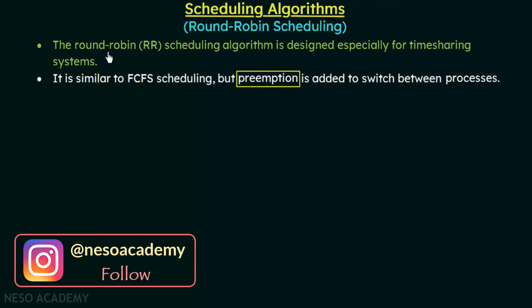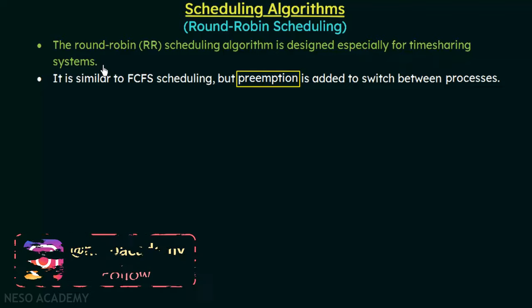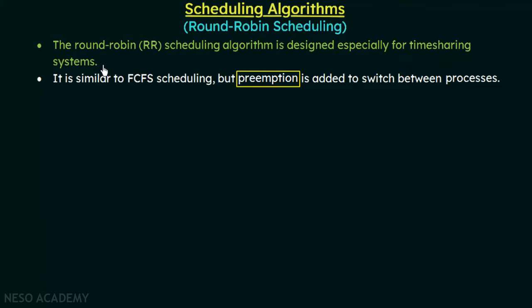The round robin scheduling algorithm is designed especially for time sharing systems. We will understand why as we move ahead. It is similar to the FCFS scheduling, but preemption is added to switch between processes.